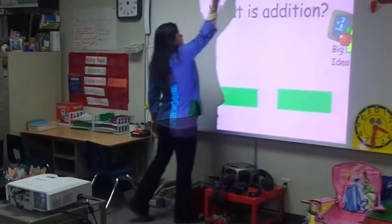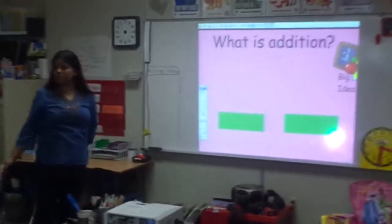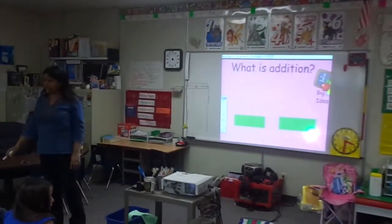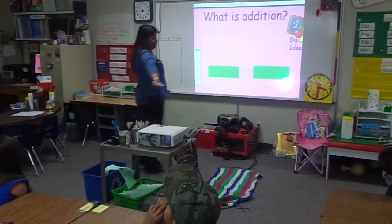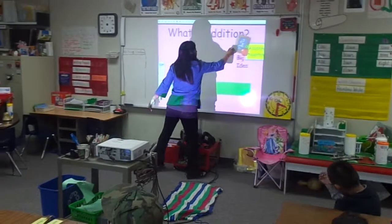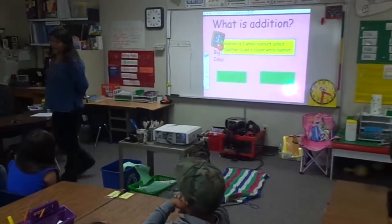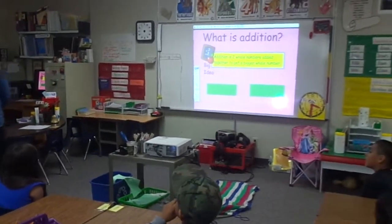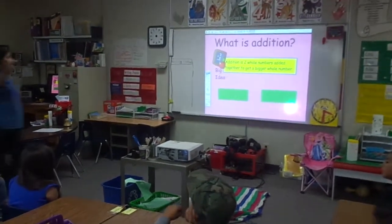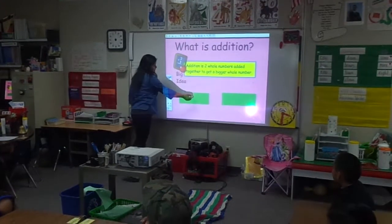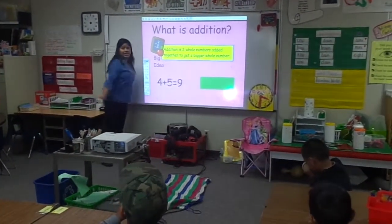What is addition? Addition is two whole numbers. And look at the big ideas over here. Addition is two whole numbers added together to get a bigger whole number. Like four plus five equals nine.